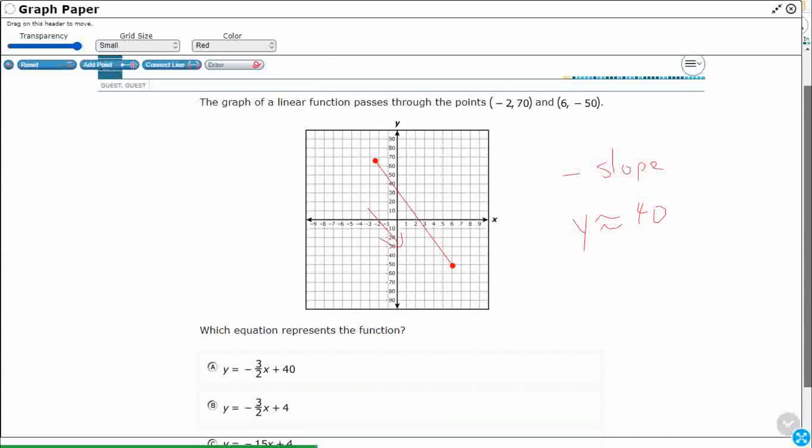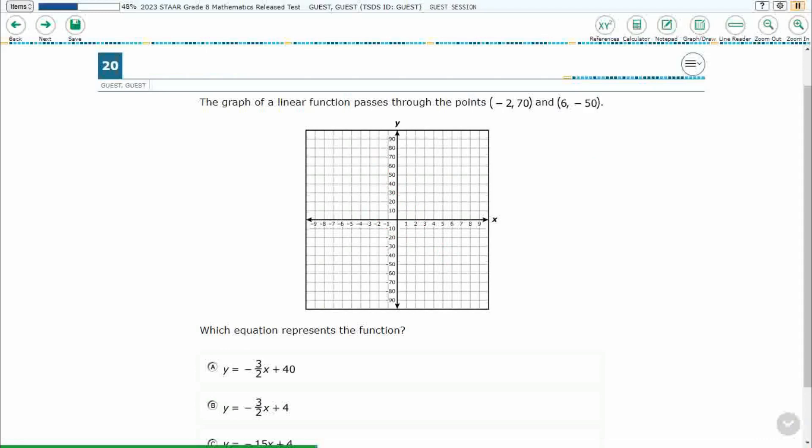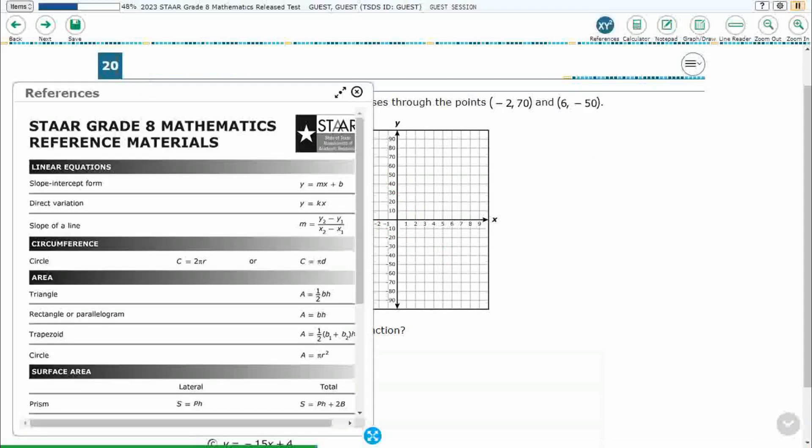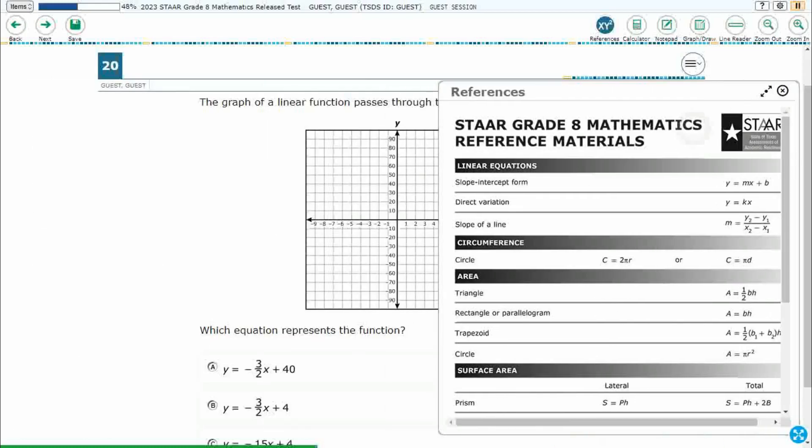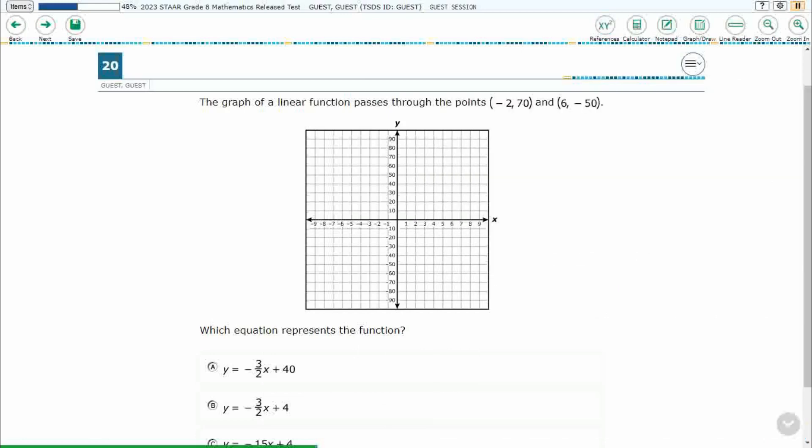Well, what we need to do is let's take a look at our reference materials. Slope intercept form is y equals mx plus b. That's what all of our answers are in, so we need to find slope intercept form. The only information they give us are two points. We can use that to find the slope of a line, m equals change in y over change in x.